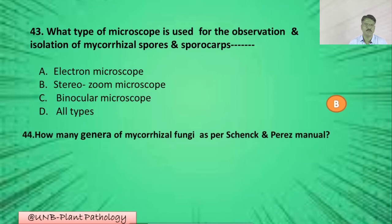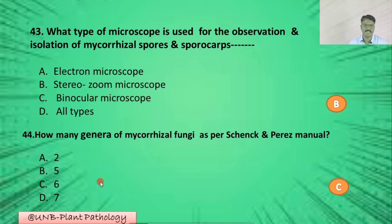Question number forty-four: How many genera of mycorrhizal fungi are there as per Schenck and Perez's manual? A: two; B: five; C: six; D: seven. The correct option is C: six.